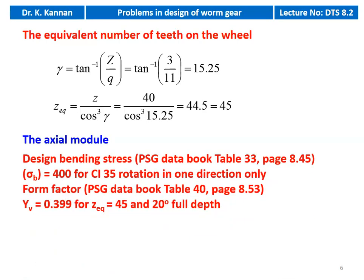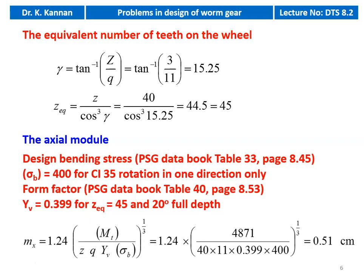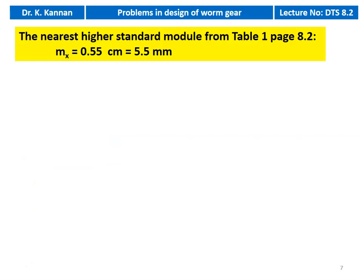Then we calculate the axial module. For axial module we require the design bending stress from table 33, page 8.45: σb = 400 for cast iron 35 material, rotating in one direction only. Form factor from PSG data book table 40, page 8.53: Yv = 0.399 for Ze = 45 and 20 degree full depth. The axial module equation gives: mx = (1.24 × design torque / (z × Q × Y × σb))^(1/3). Substituting: mx = (1.24 × 4871 / (40 × 11 × 0.399 × 400))^(1/3) = 0.51 cm. We take the next higher standard module from table 1, page 8.2: 0.55 cm or 5.5 millimeter.